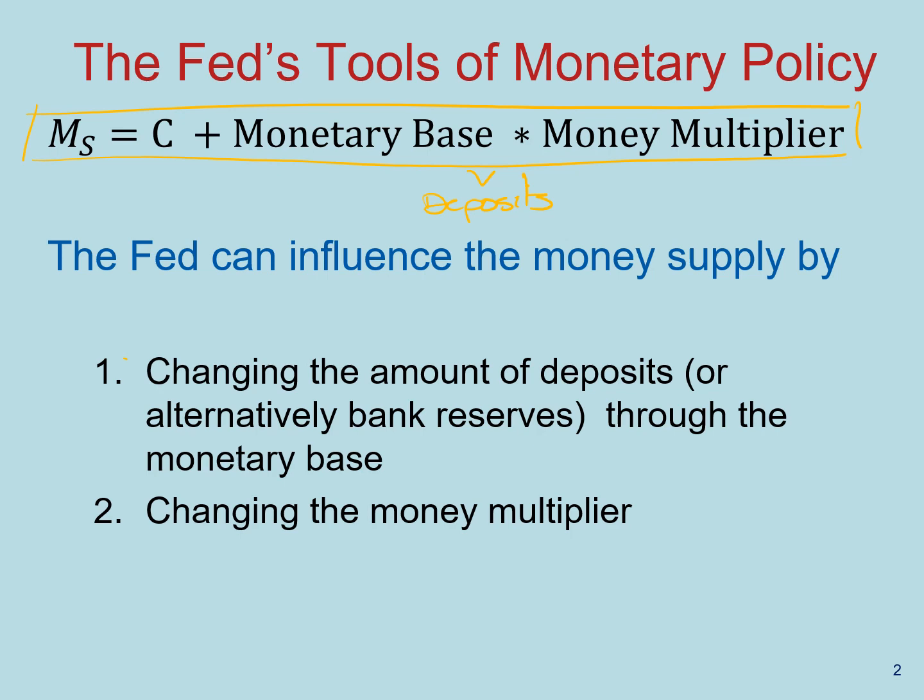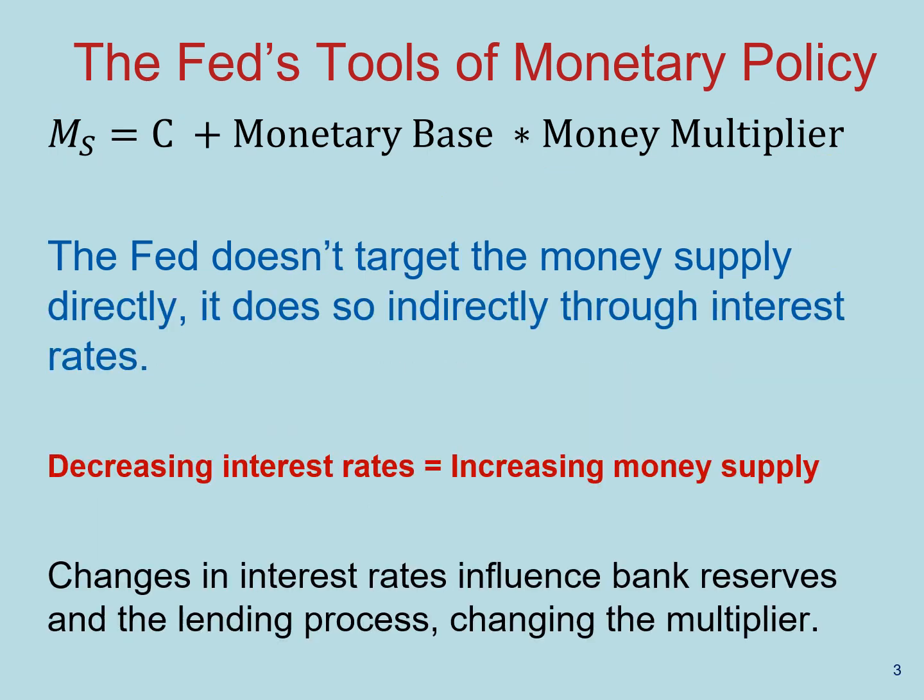So if the Fed would like to change any of those things, it would have to change the amount of deposits or, alternatively, the bank reserves through the monetary base, or it can influence the money creation process through the money multiplier. Now the Fed could, as it did in fact in the past, target the money supply. But instead, more recently, the approach has been to alter or change the money supply indirectly through interest rates.